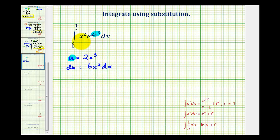So to make this match our integral, we'll divide both sides by six to isolate x squared dx. So now we have one sixth du is equal to x squared dx. So x squared dx can now be replaced with one sixth du.